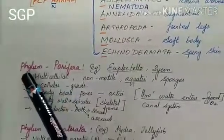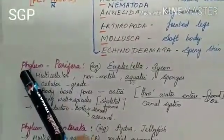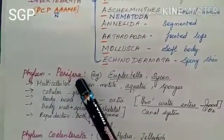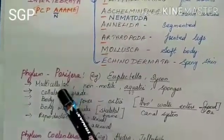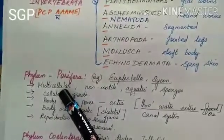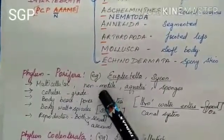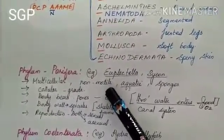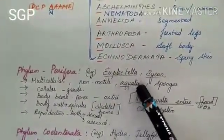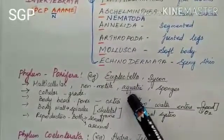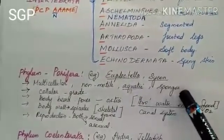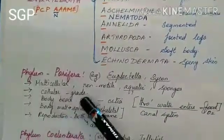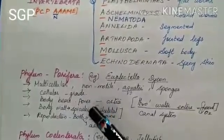First we will see the characteristic features of phylum Porifera. Organisms in this phylum are multicellular and non-motile, meaning they cannot move from one place to another. They are aquatic forms, mainly called sponges, and have a cellular grade of organization.